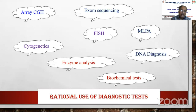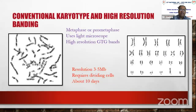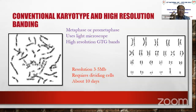For the next 10 to 12 minutes, we will discuss the rational use of diagnostic tests using case illustrations. The commonest test used by a geneticist is the conventional karyotype — a metaphase or prometaphase preparation using light microscopy with high-resolution GTG banding. It requires dividing cells, has a turnaround time of 10 to 14 days, and is the simplest and least costly test for suspected genetic disorders.